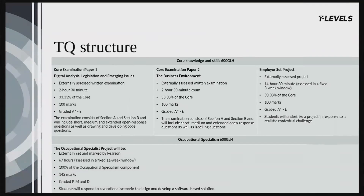For this particular TQ, your students must undertake the core component and the Occupational Specialism. The core and the Occupational Specialism components can be delivered however you feel is best for your students, including integration of their interests and access to expertise and resources at your centre. For example, you could cover the core component in Year 1 and the Occupational Specialism in Year 2, or deliver both components at the same time. The choice is totally yours. For more information on delivery, make sure you attend our Getting Ready to Teach events.